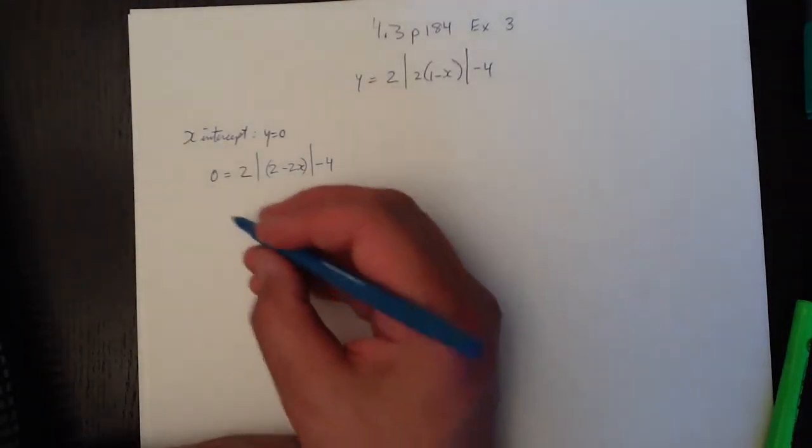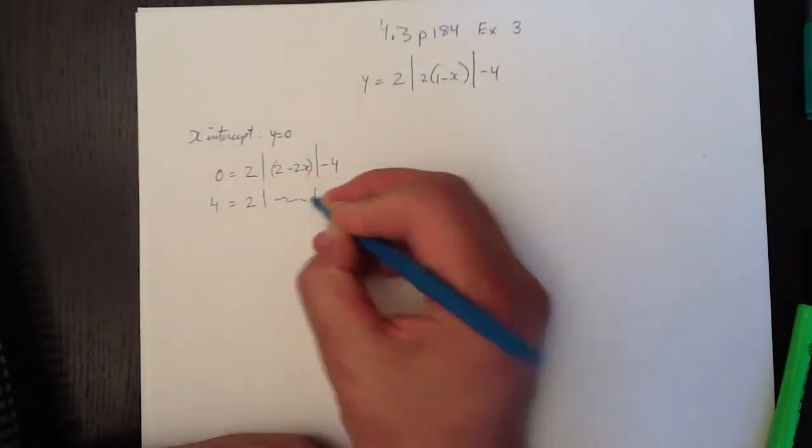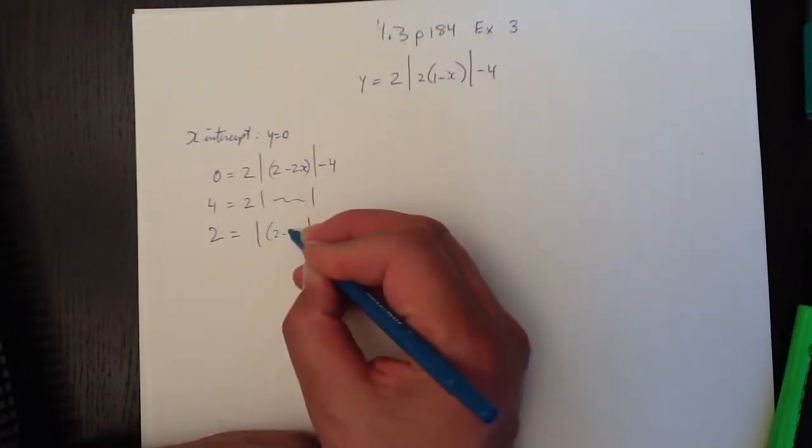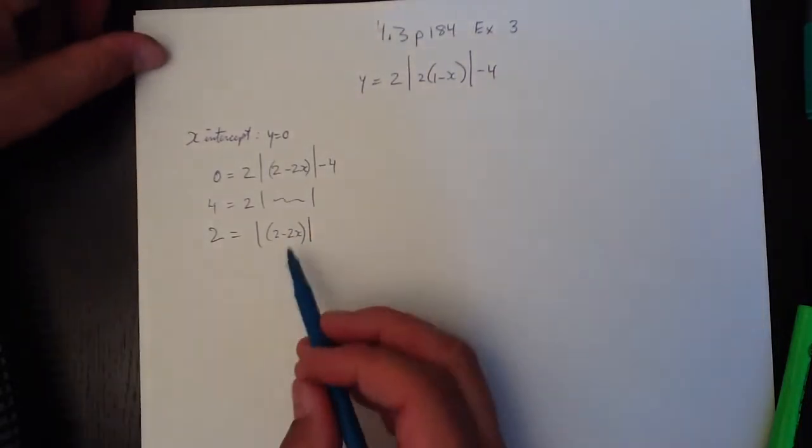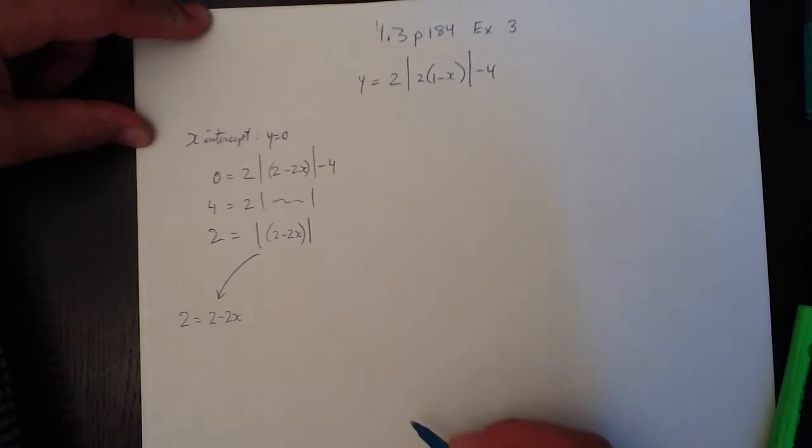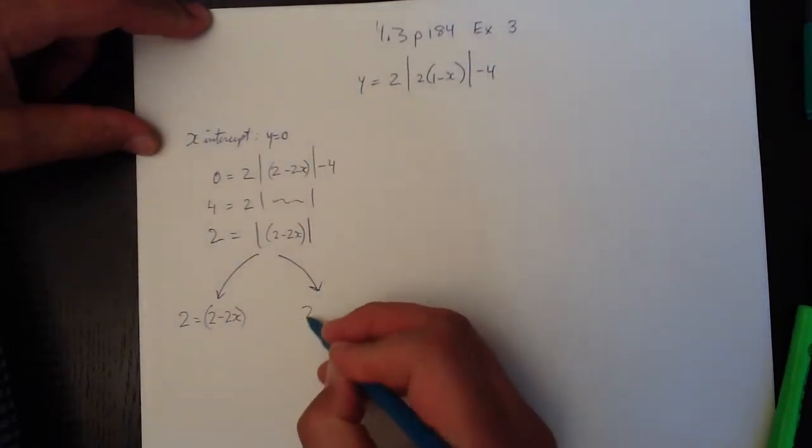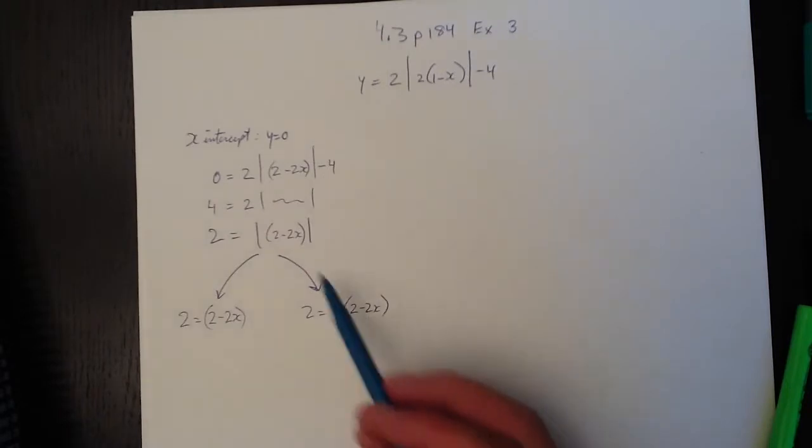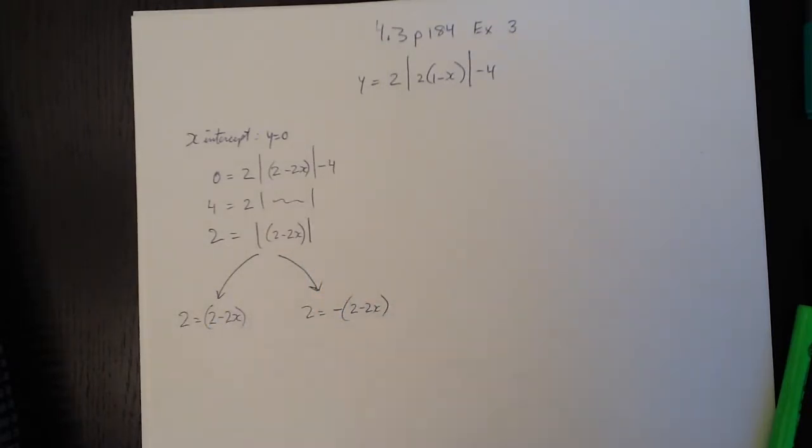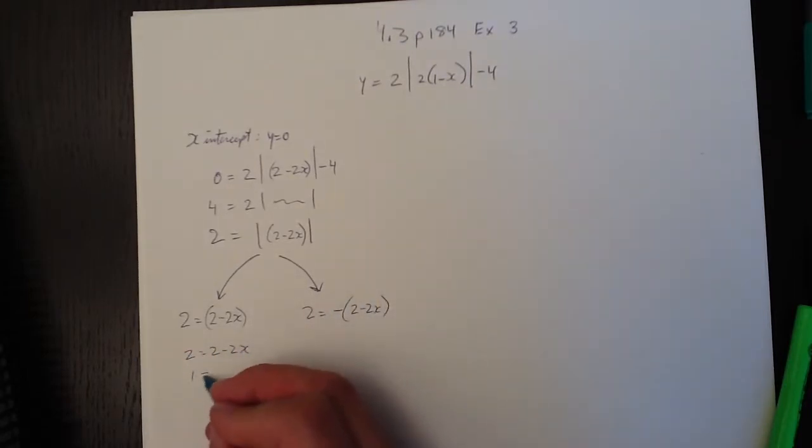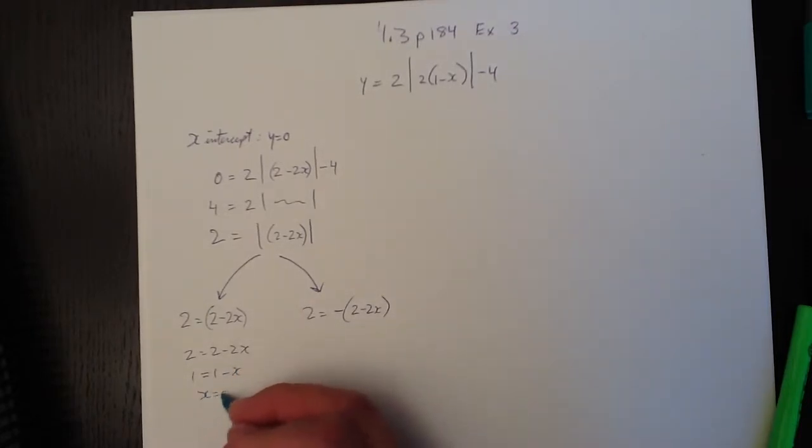Which means that 4 equals 2 times that stuff. So 2 equals the absolute value of the same stuff, which is 2 minus 2x. Now, the absolute value of 2 minus 2x can be 2 equals 2 minus 2x. Let's solve for x. So 2 equals 2 minus 2x, divide everything by 2, we get 1 equals 1 minus x. X equals zero. That was easy.